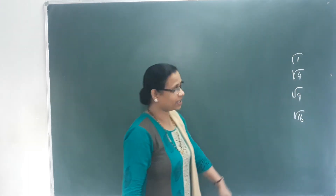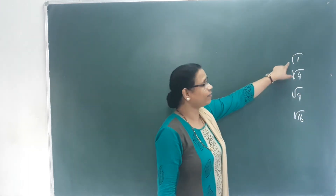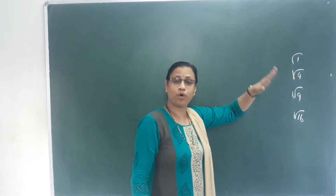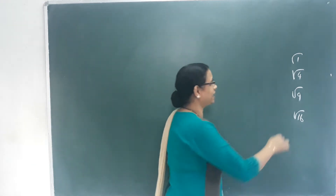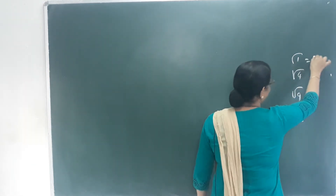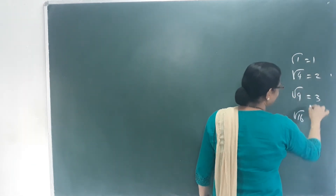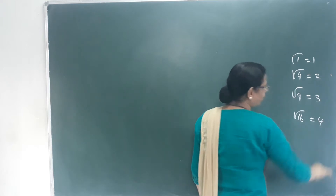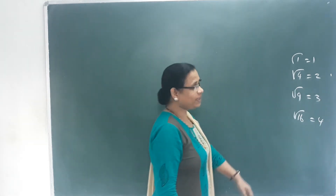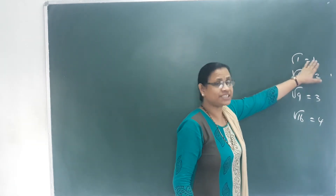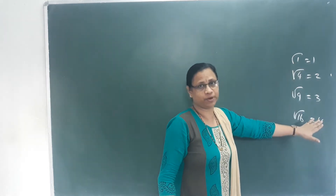This is a perfect square. This is the root. This is 1, this is 2, this is 3, this is 4. Now we call these rational numbers.